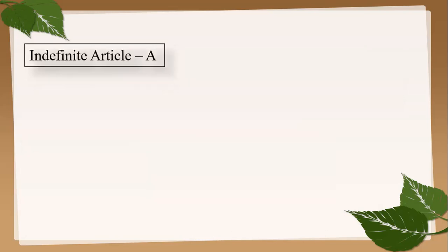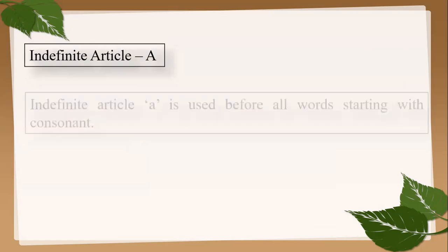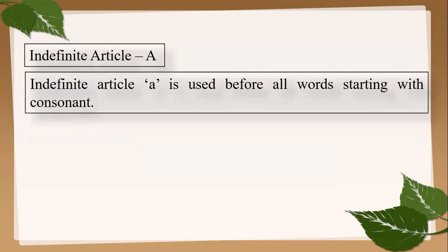Now let's look at the indefinite article 'a'. It is used before all words starting with a consonant letter. And remember that 'a' is an indefinite article — it does not identify or particularize any thing or any person.